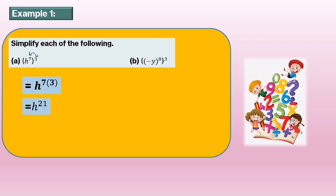Part B: negative y to the power of 8, bracket to the power of 3. To solve this, if the index is an even number, then we can eliminate the negative. Let me show you why. If negative y to the power of 2, it equals negative y times negative y. Negative times negative equals positive, so you get y to the power of 2.